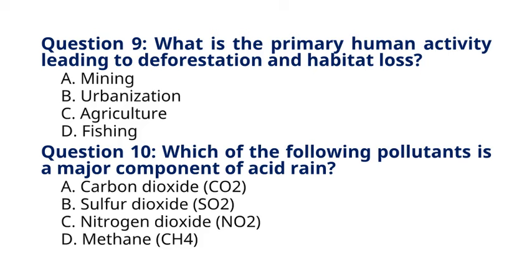Question 10. Which of the following pollutants is a major component of acid rain? A. Carbon dioxide, CO2. B. Sulfur dioxide, SO2. C. Nitrogen dioxide, NO2. D. Methane, CH4. The correct answer to question 10 is option B. Sulfur dioxide, SO2. Explanation: sulfur dioxide, SO2, emitted from burning fossil fuels, particularly coal, reacts with atmospheric moisture to form sulfuric acid, H2SO4, a major component of acid rain.